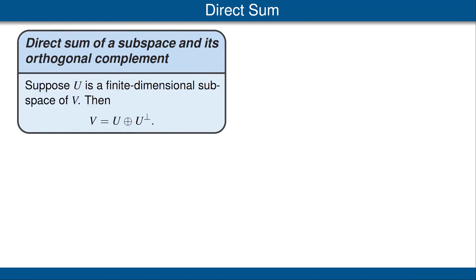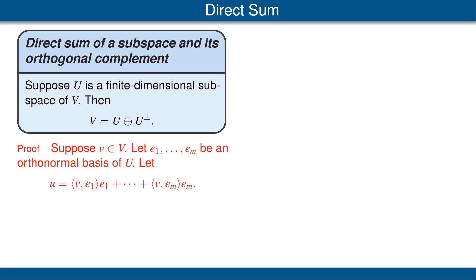Our next result states that if U is a finite dimensional subspace of V, then V is equal to U direct sum the orthogonal complement of U. Let's give a sketch of the proof of this important result. Let's ignore the direct sum for a moment. Our first goal is to prove that the entire vector space V is equal to U plus the orthogonal complement of U.